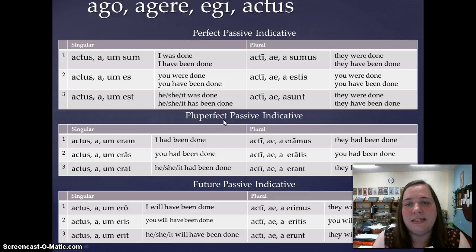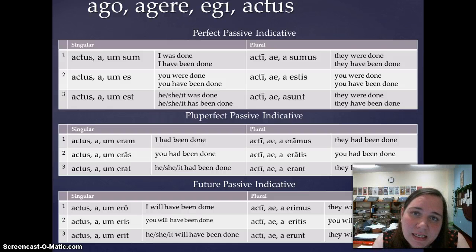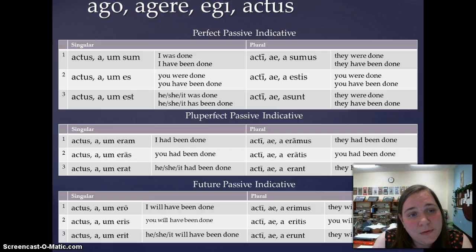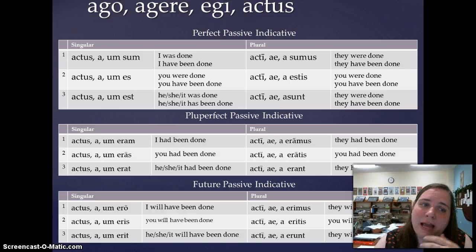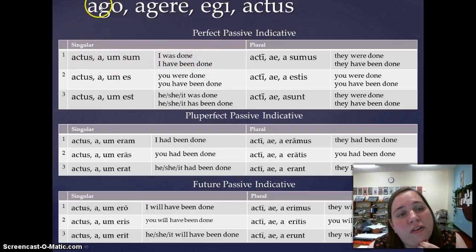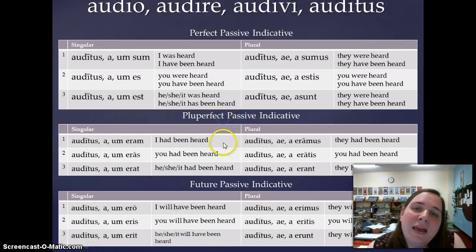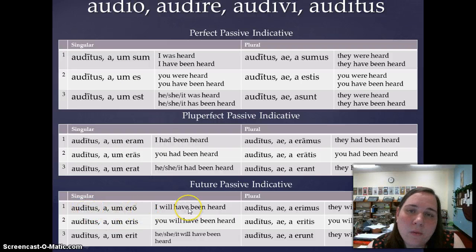I go through this same pattern for two more paradigm verbs. First: ago, agere, egi, actus. It's so important to learn the fourth principal parts of all verbs — if you don't know that actus is the fourth principal part of ago, you might try looking up acto as a verb, but that's not a verb. The perfect passive is actus sum — I was done. Then: audio, audire, audivi, auditus. Auditus sum — I was heard; audita eram — I had been heard; audita ero — I will have been heard. Push pause and write down these forms — I will check tomorrow.